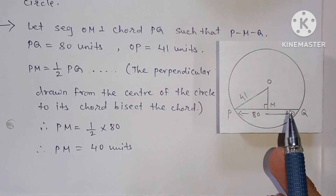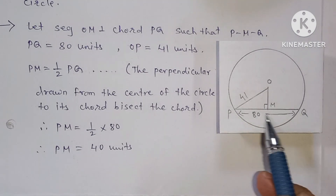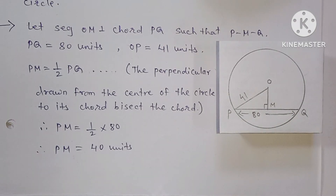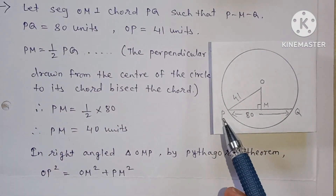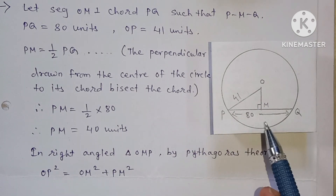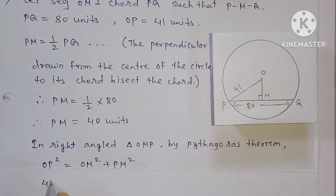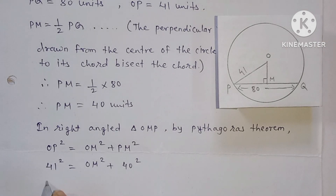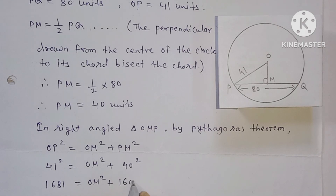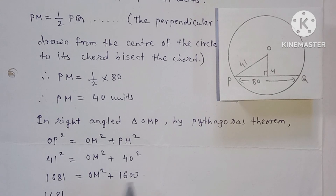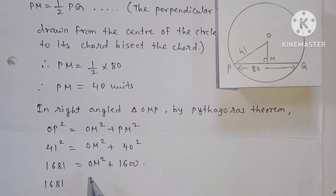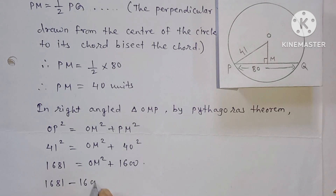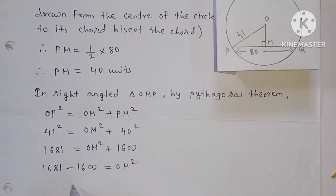In triangle OMP, this is a right angle triangle, so we apply the Pythagoras theorem. By Pythagoras theorem: OP² = OM² + PM². Substituting values: 41² = OM² + 40², so 1681 = OM² + 1600. Moving 1600 to the other side: OM² = 1681 − 1600 = 81.